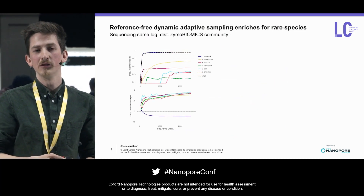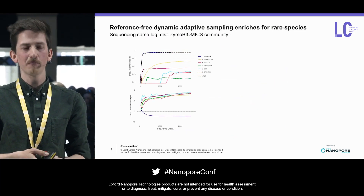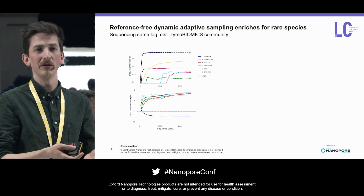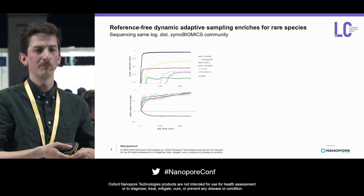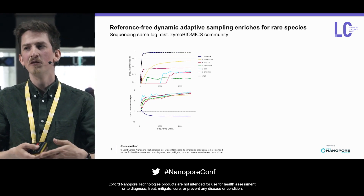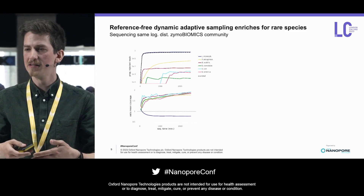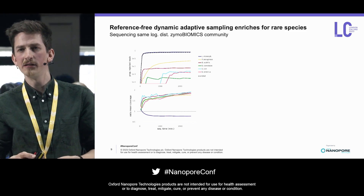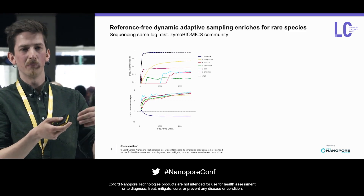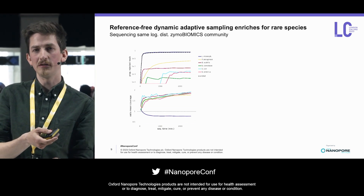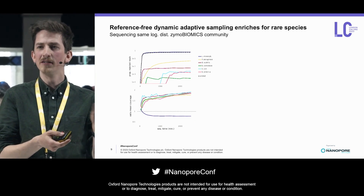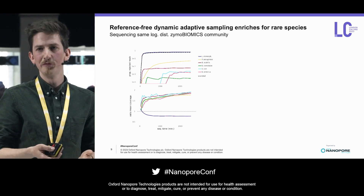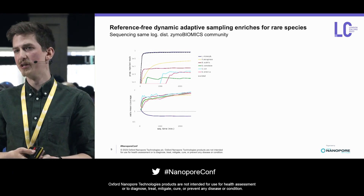We apply this to the same sample, and we see the same thing happening — we progressively start to reject reads from the more abundant species and sample from the less abundant ones instead. On the bottom, you can see that the most abundant species is depleted, and the rest of the species are enriched by up to two-fold in our preliminary experiments.